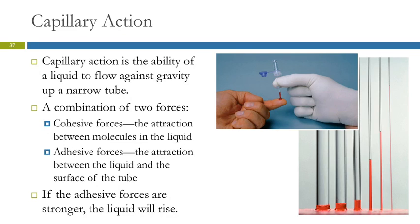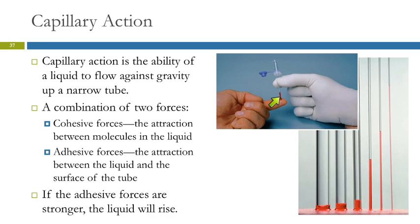Capillary action is the ability of a liquid to flow against gravity up a narrow tube. Here we have someone getting blood drawn — you take a little capillary tube, touch it to the surface of the blood, and the blood just runs up the tube all by itself without having to suck it up. There are two forces at work: a cohesive force — attractions between molecules in the liquid — and an adhesive force — attraction between the liquid and the surface of the tube. The blood is attracted to the tube surface and creeps up the edge, and since it's also attracted to other blood molecules, as it creeps up it pulls its neighbors with it. It only goes so high, though, because gravity is pulling it down.